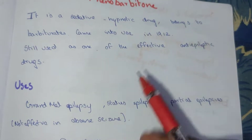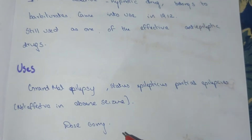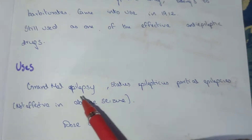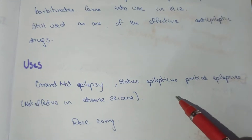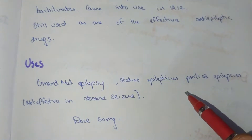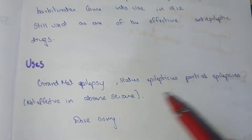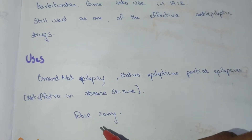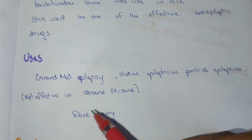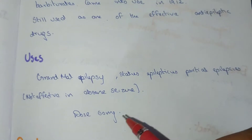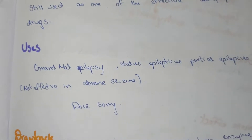Phenobarbital is used in grand mal epilepsy, status epilepticus, and partial epilepsy. It is not effective in absence seizure. The dose is 60 milligrams.